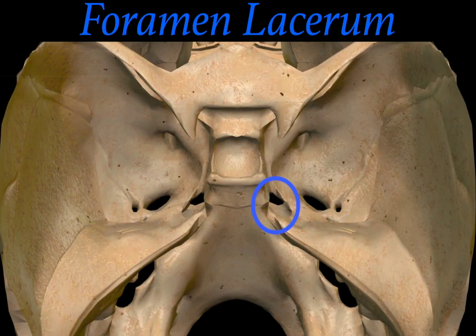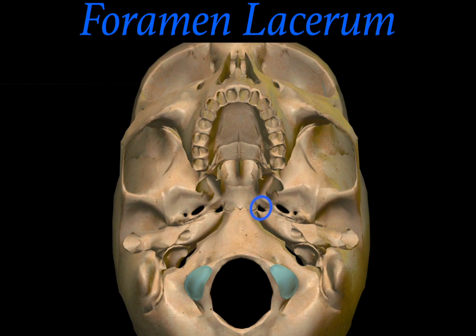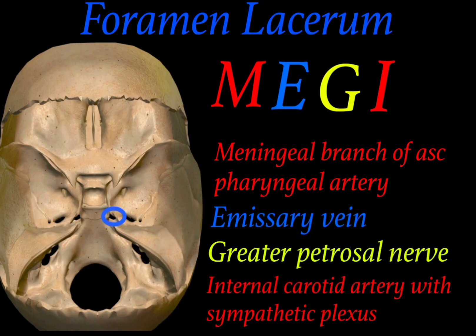Besides all these foramina, medially there lies foramen lacerum. Foramen lacerum is present medially to all the foramina of the skull. It gives passage to MEGI structures: M stands for meningeal branch of ascending pharyngeal artery, E stands for emissary vein, G stands for greater petrosal nerve, and I stands for internal carotid artery with sympathetic plexus.